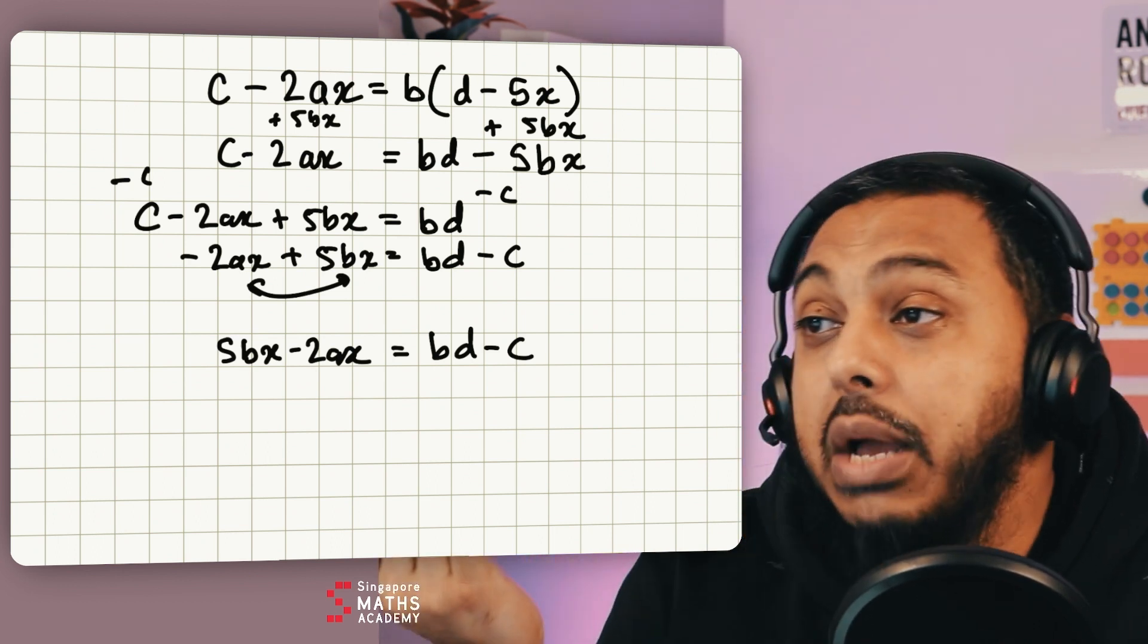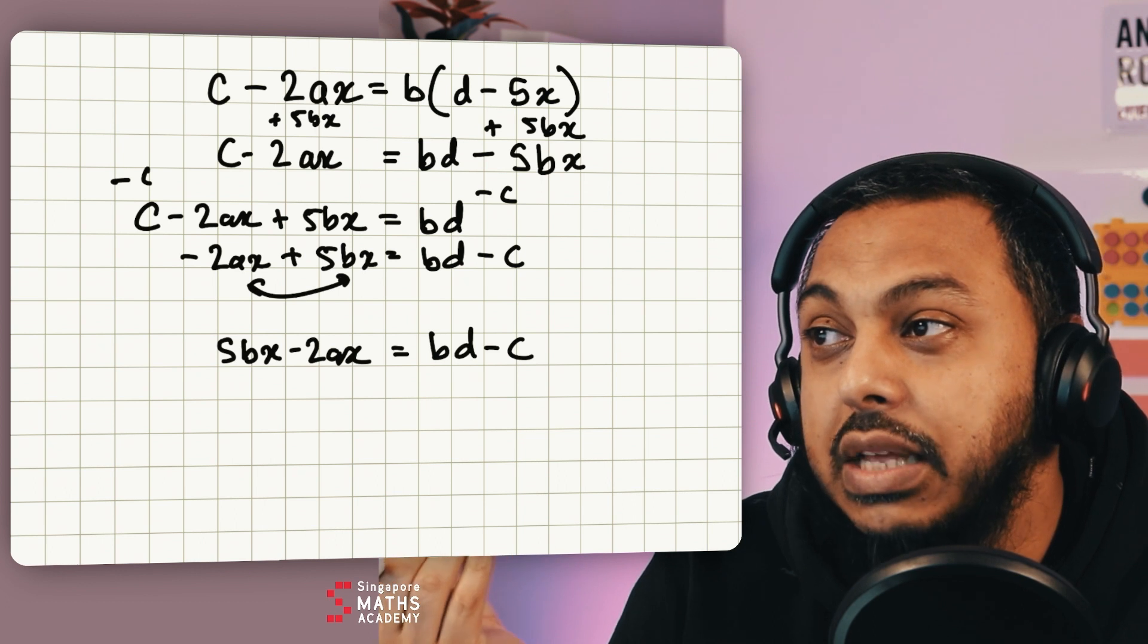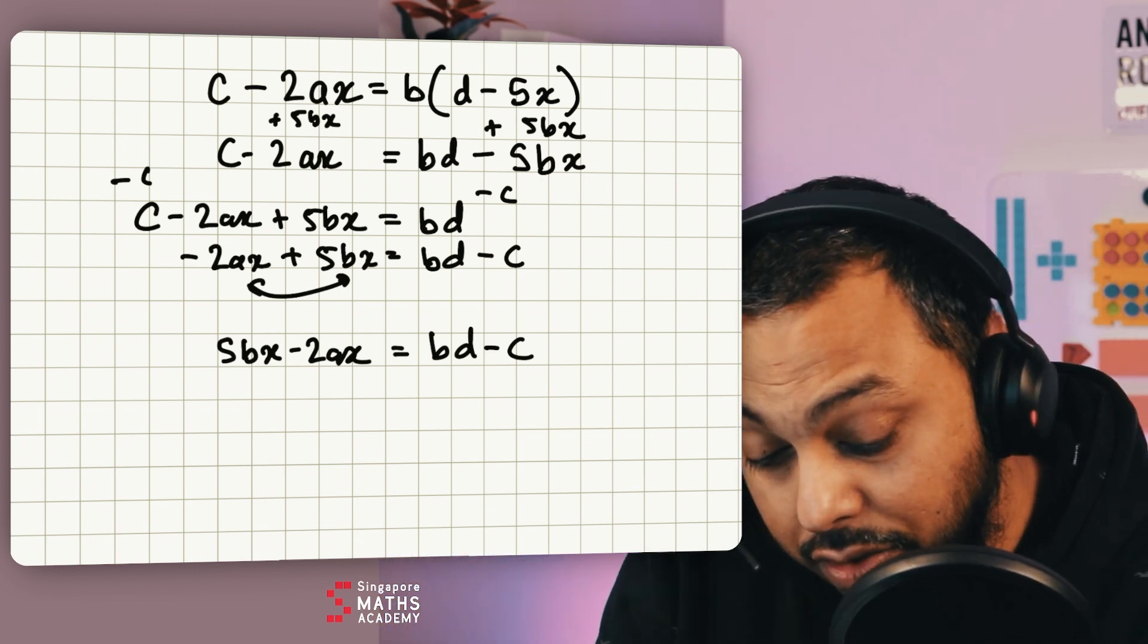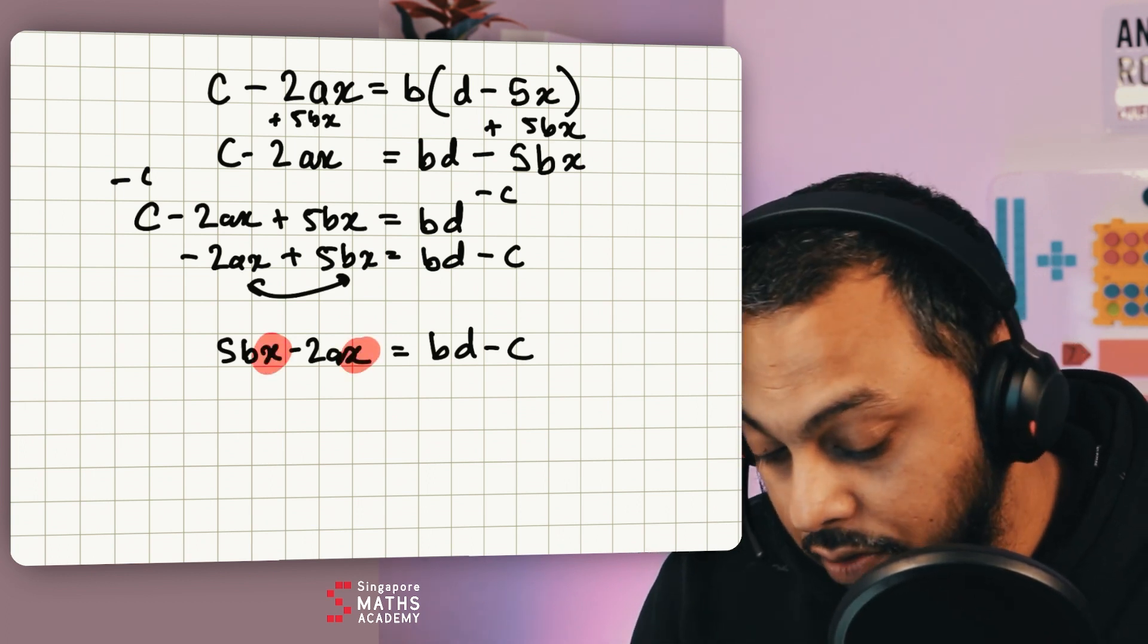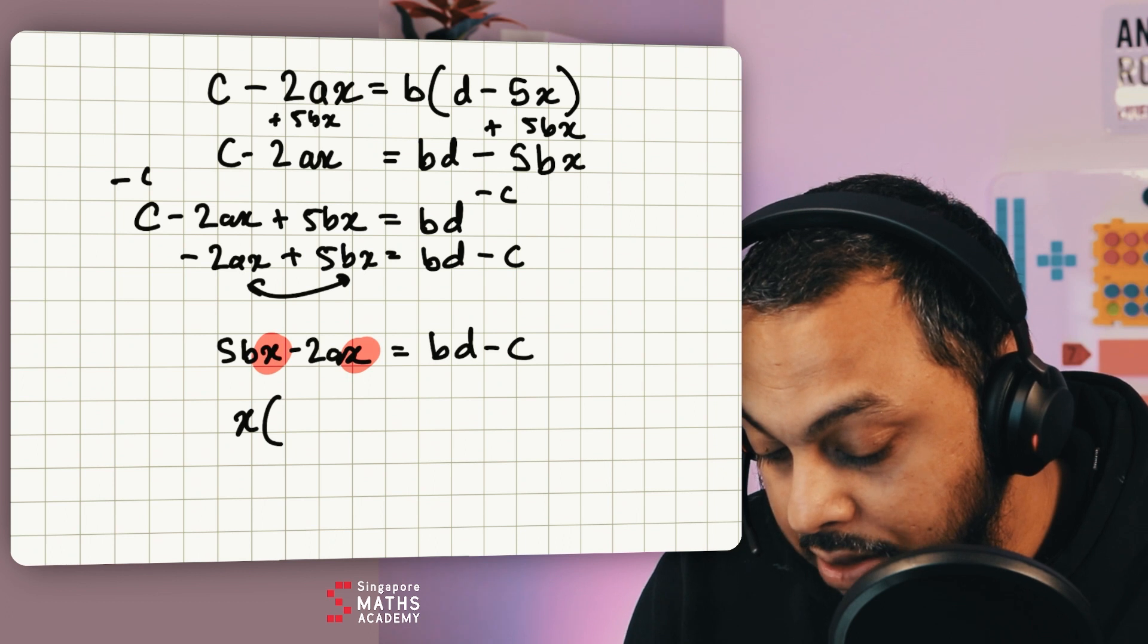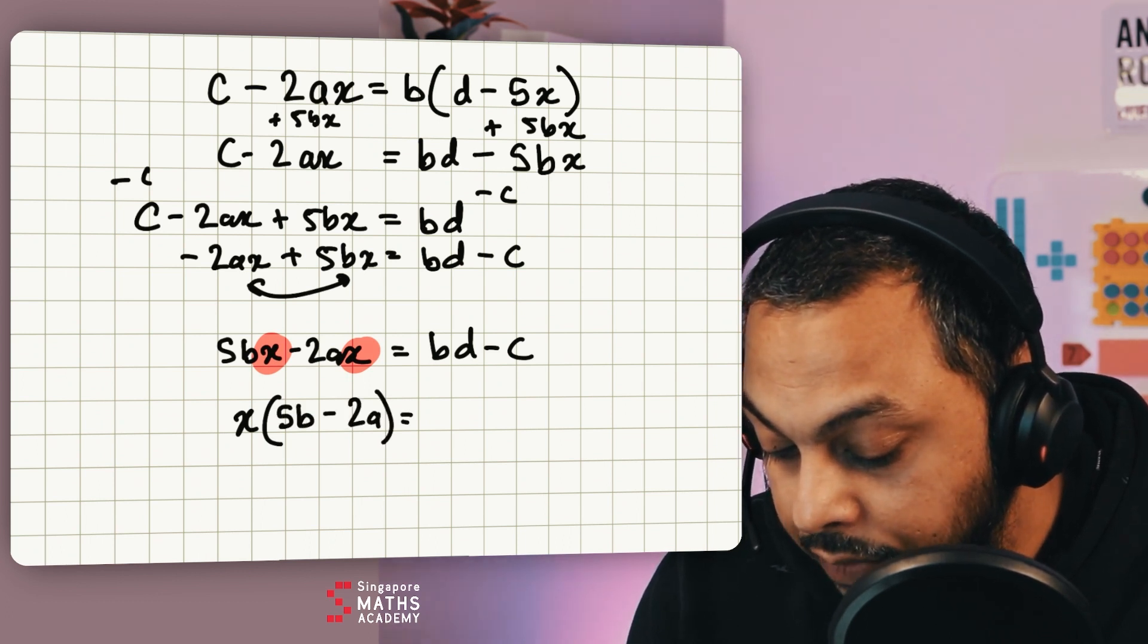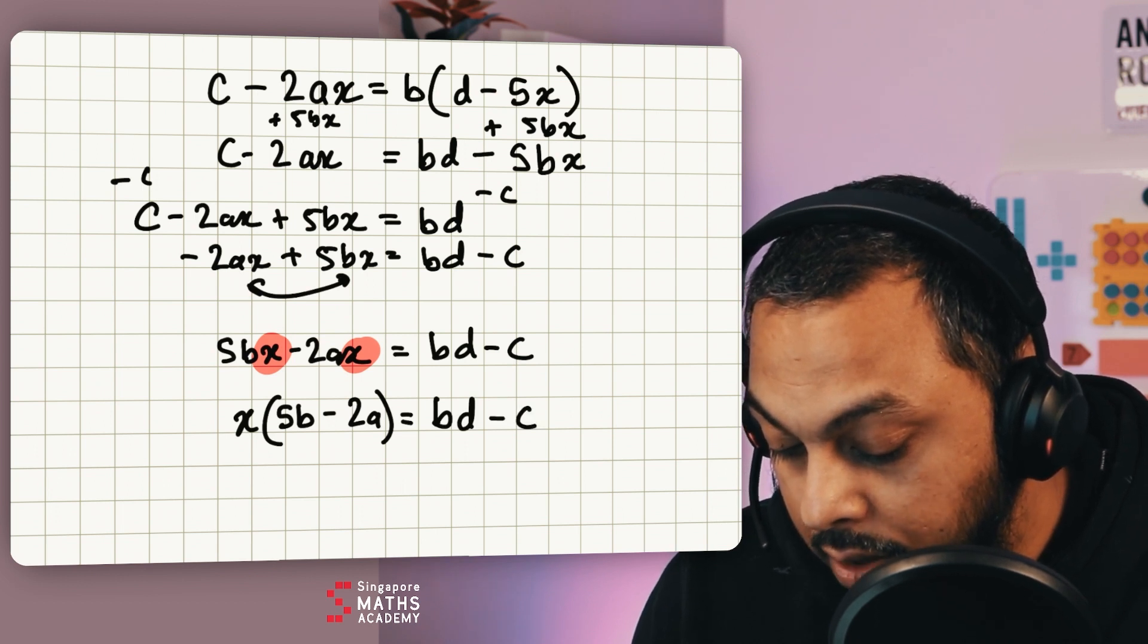So the next step you might be stuck at this point possibly. But you can start to recognize that they both have x's these two terms. So I can factorize so it becomes x brackets 5b take away 2a is equal to bd take away c.